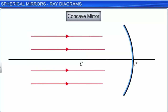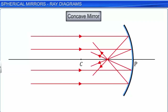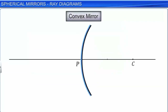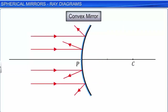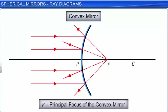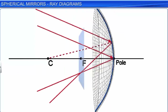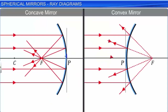Paraxial rays parallel to the principal axis, after reflection from a concave mirror, converge to a point on the principal axis called the principal focus of the concave mirror. In the case of a convex mirror, such parallel rays after reflection appear to diverge from a point on the principal axis known as the principal focus of the convex mirror. When parallel rays making a small angle with the principal axis are incident on a concave mirror, they converge to a point on a plane normal to the principal axis passing through the principal focus — this plane is called the focal plane. The distance between the pole and the principal focus is called its focal length F.